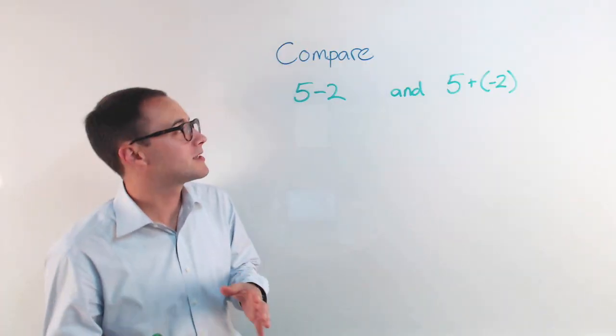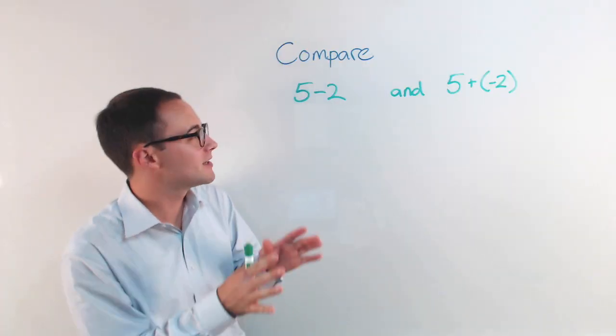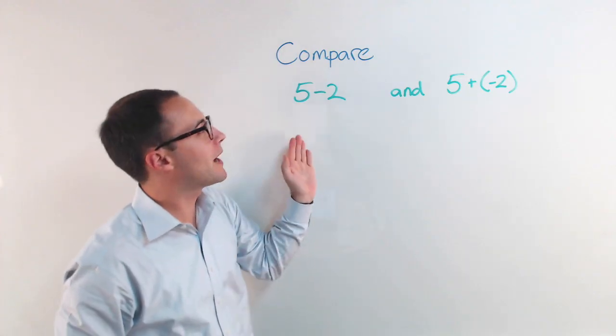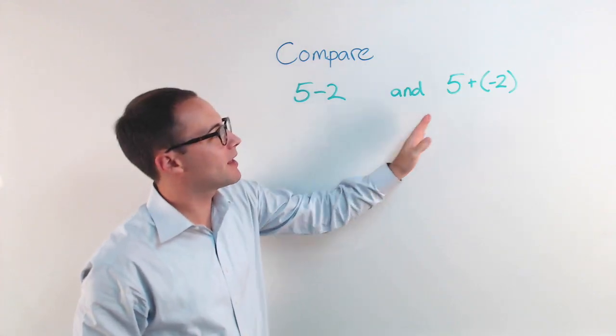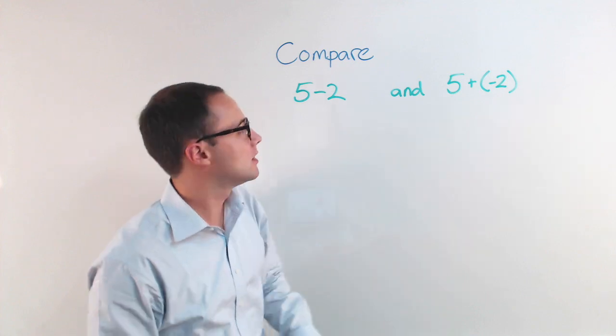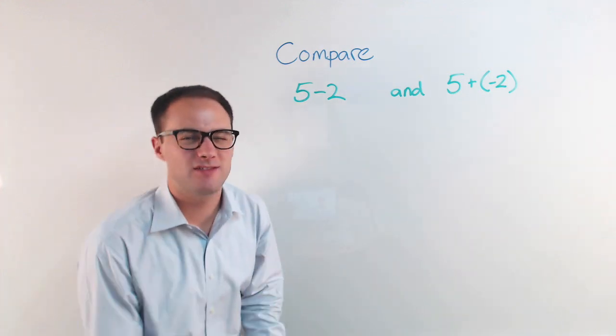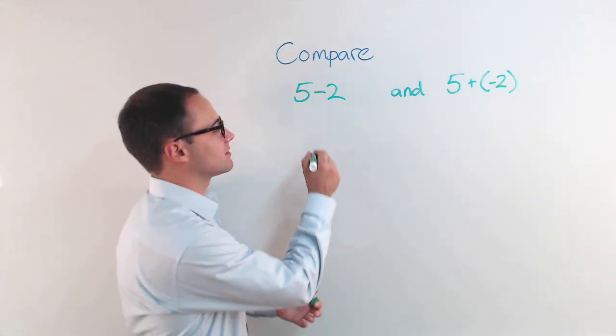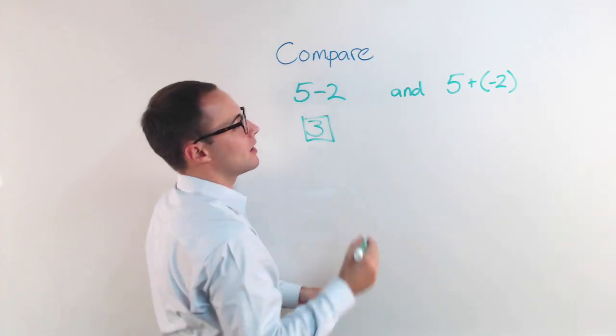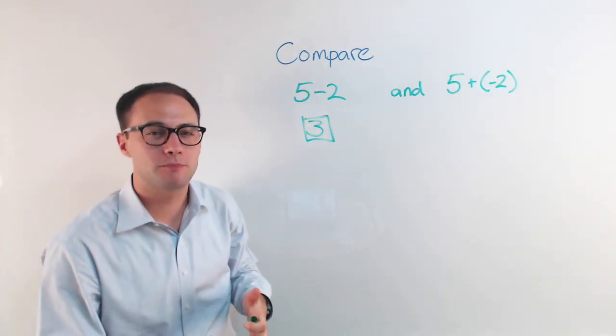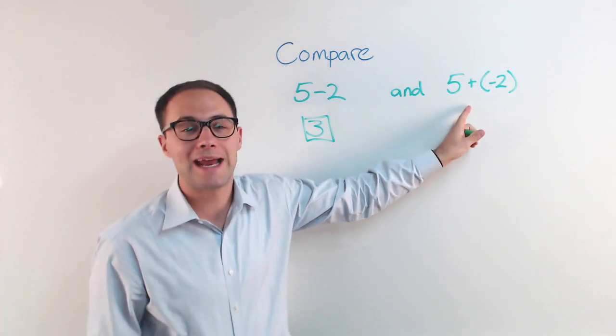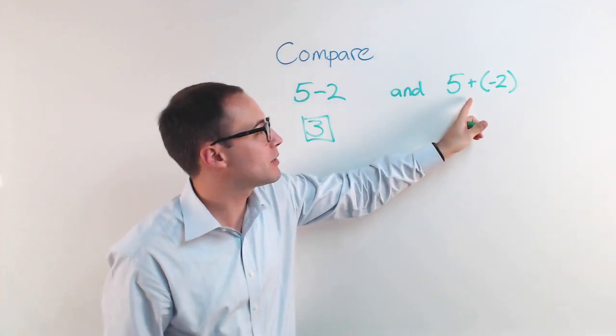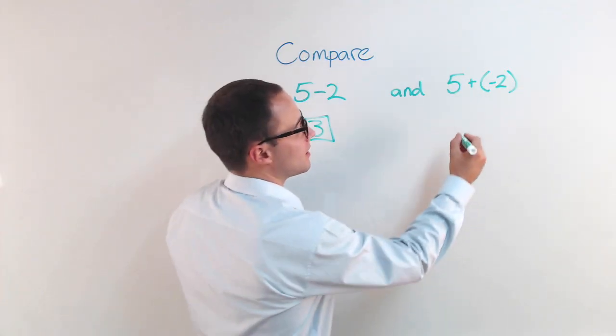Alright, before we start talking too much about subtracting integers, I've got a problem for us. Compare 5 minus 2, compare that to 5 plus negative 2. Well, 5 minus 2, you guys have done that since probably kindergarten, that's just 3. We know that. 5 plus a negative 2, we just practiced in the last video adding integers. 5 plus a negative 2 would give me 3 as well.